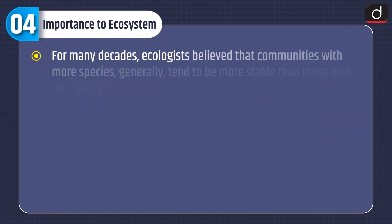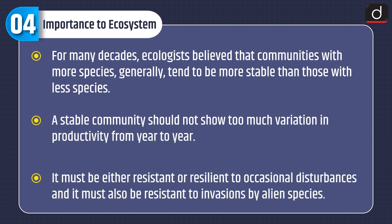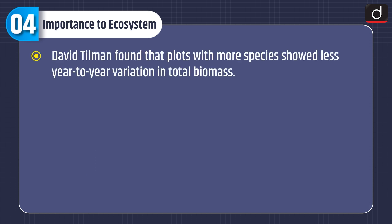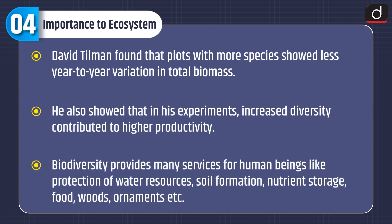Regarding importance to ecosystem, ecologists have long believed that communities with more species tend to be more stable than those with fewer species. A stable community should not show too much variation in productivity from year to year, must be resistant or resilient to occasional disturbances, and resistant to invasions by alien species. David Tilman found that plots with more species showed less year-to-year variation in total biomass, and that increased diversity contributed to higher productivity.